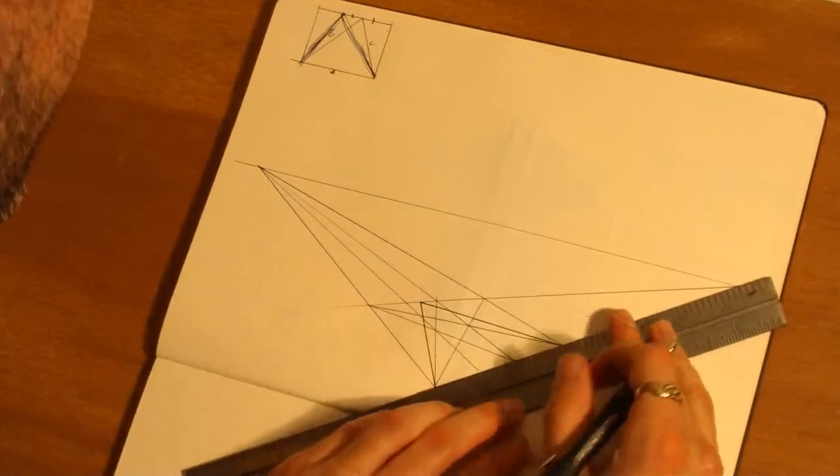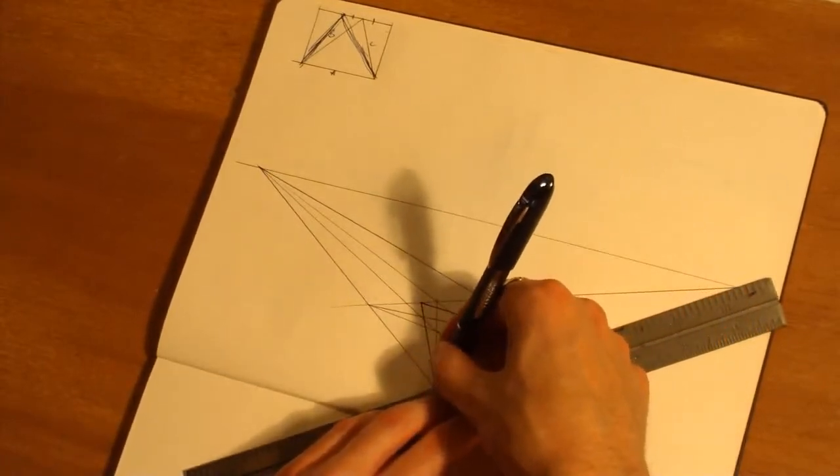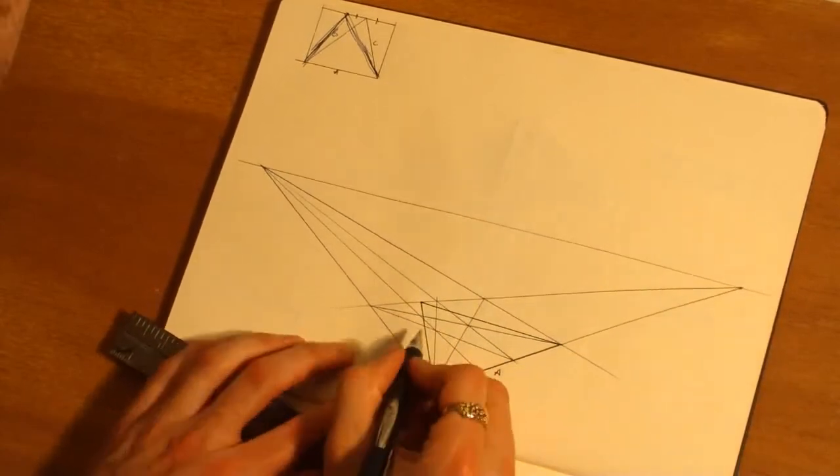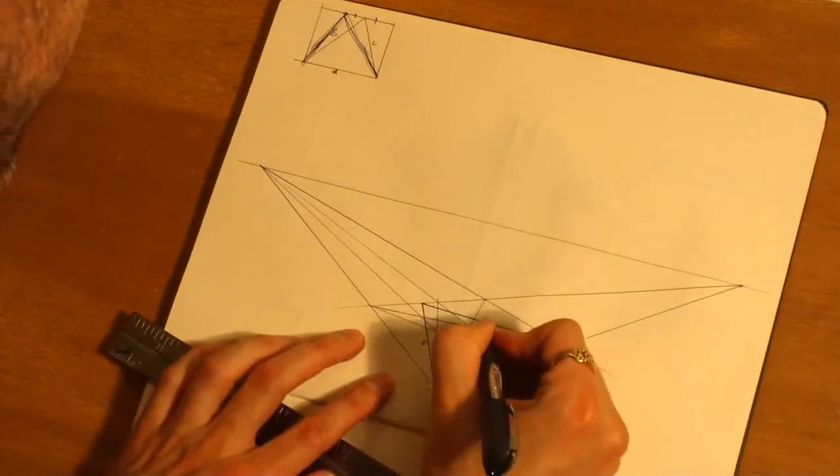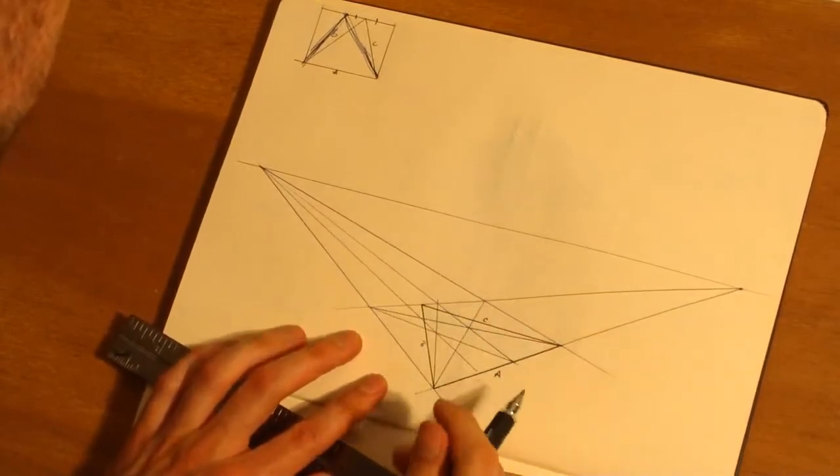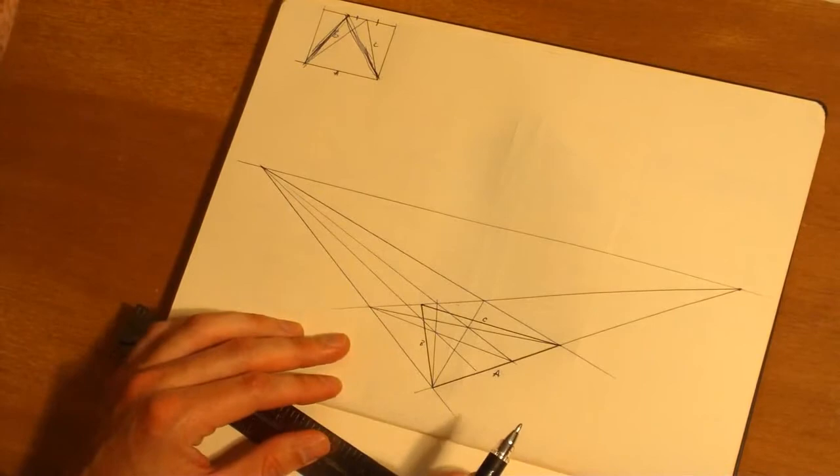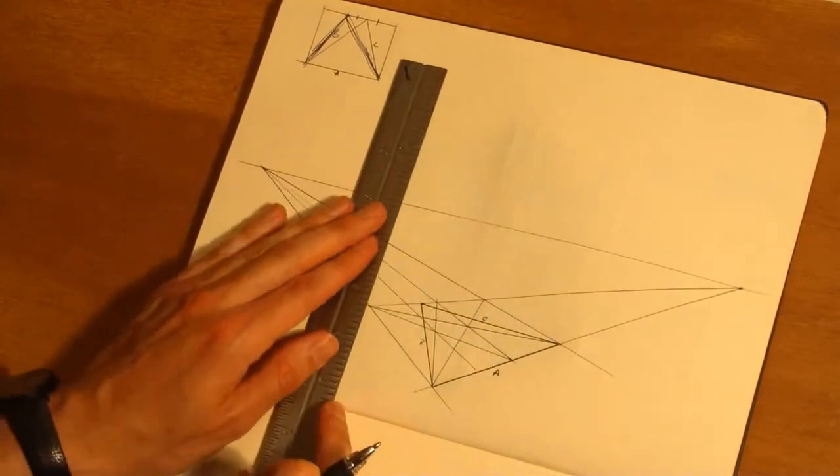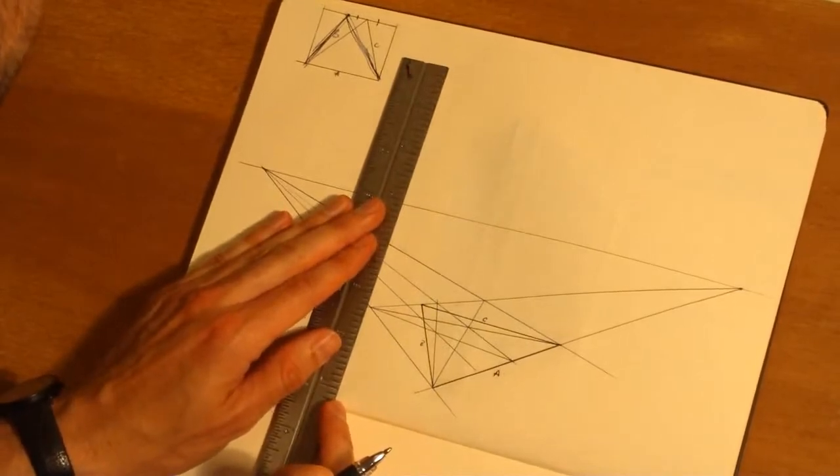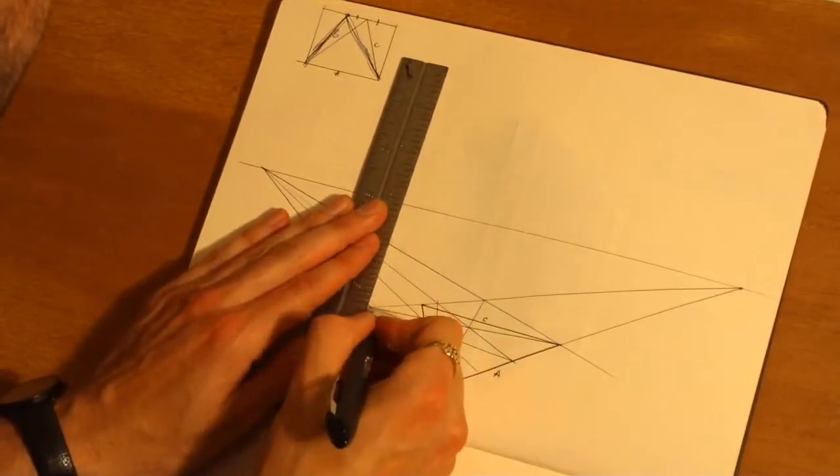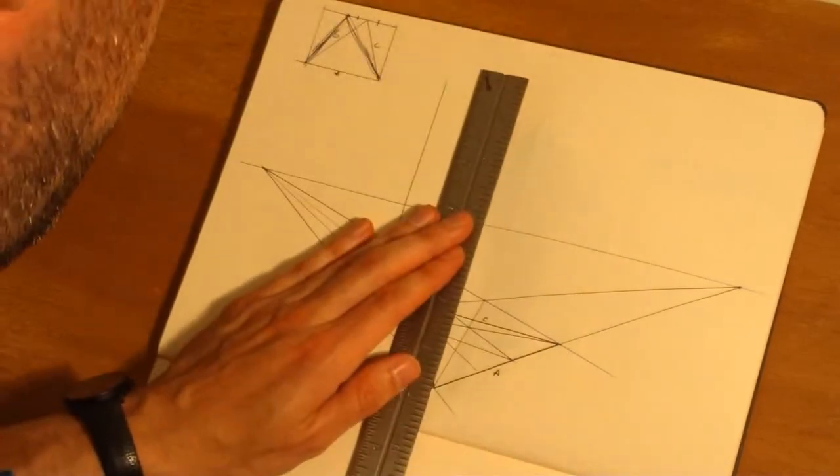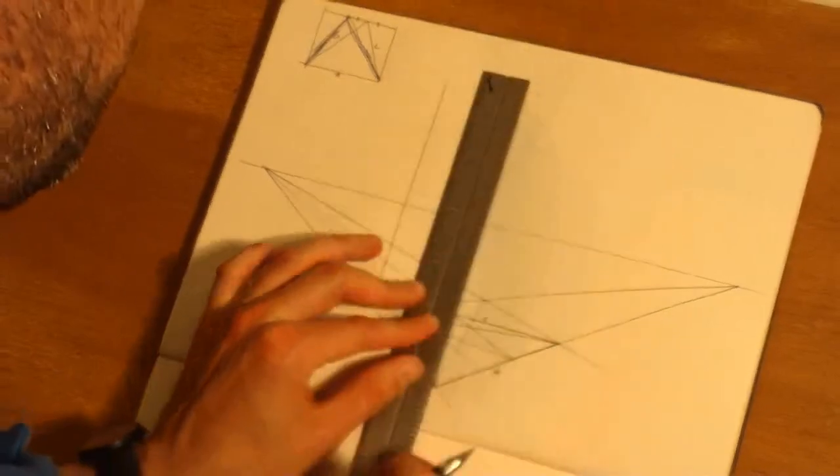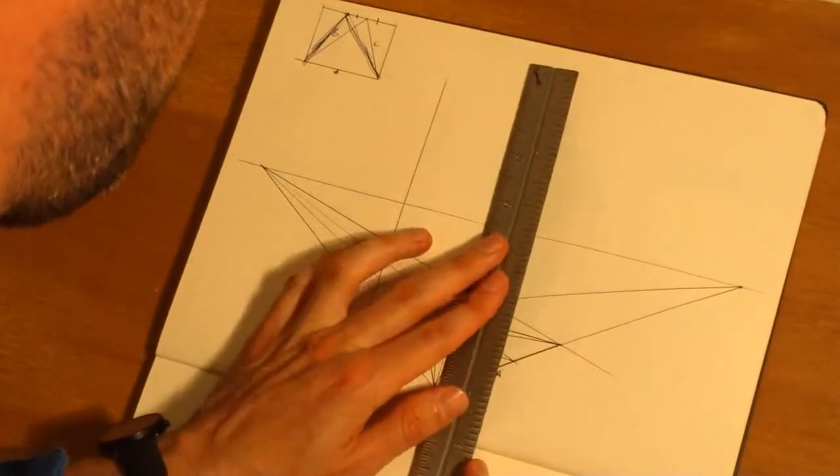I'm just going to kind of make it a little darker so it's going to be easier to see against all the other construction lines. So we have A, we've got B, we've got C. It's good to label these when you're doing this. So now I'm just going to project a rectangular solid upwards using these verticals. I've already done this - should be familiar territory.